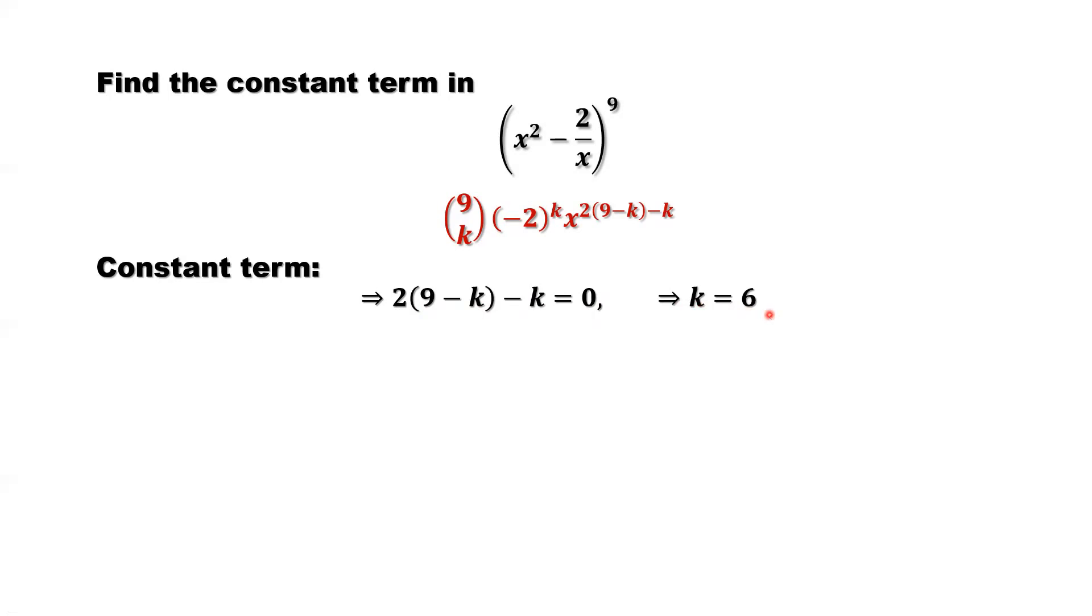If k equals 6, the power of x is 0. x to the power 0 equals 1. So the first part, that's a constant term.